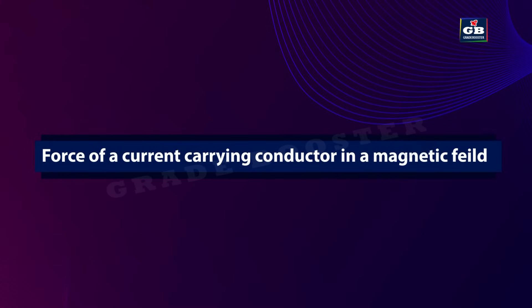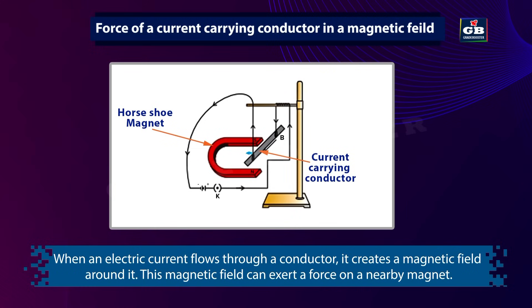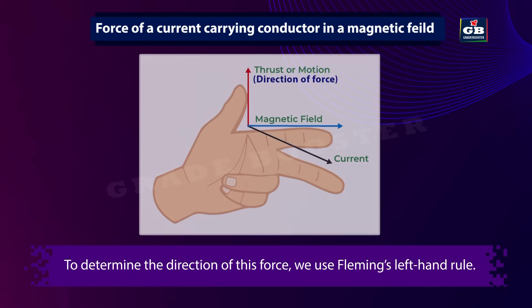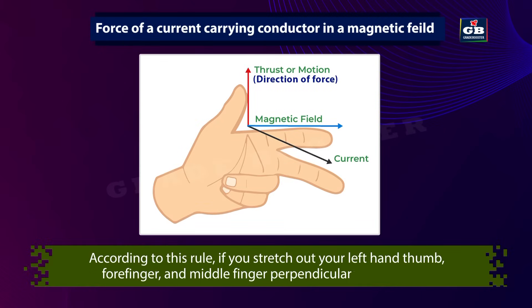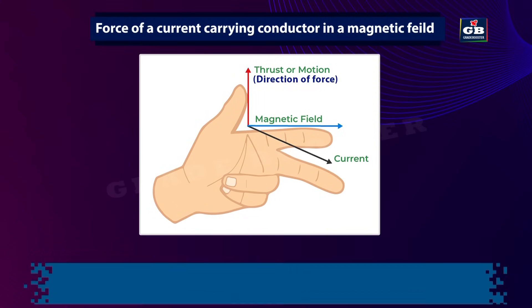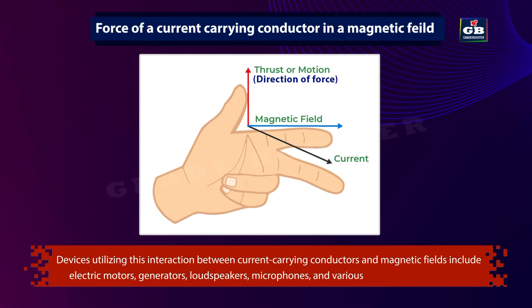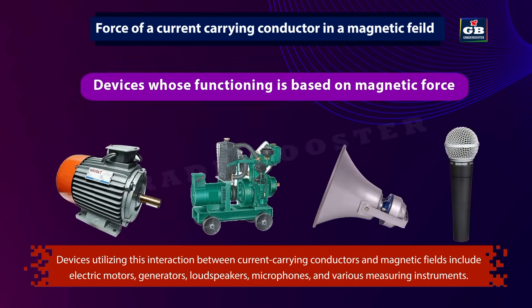Force on a current-carrying conductor in a magnetic field. When an electric current flows through a conductor, it creates a magnetic field around it that can exert a force on a nearby magnet. André-Marie Ampère proposed that the magnet also exerts an equal and opposite force on the current-carrying conductor. To determine the direction of this force, we use Fleming's left-hand rule: stretch your left-hand thumb, forefinger, and middle finger perpendicular to each other — the forefinger points in the direction of the magnetic field, the middle finger in the direction of the current, and the thumb indicates the direction of the force. Devices using this principle include electric motors, generators, loudspeakers, microphones, and various measuring instruments.